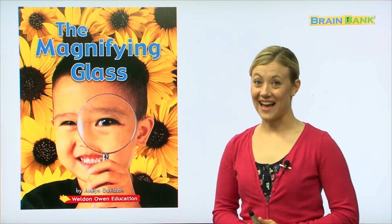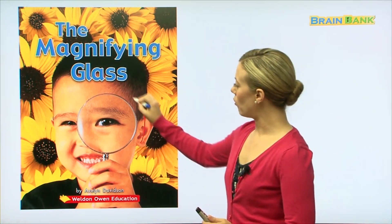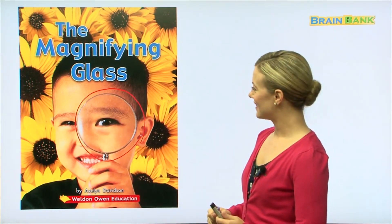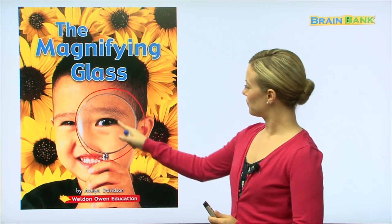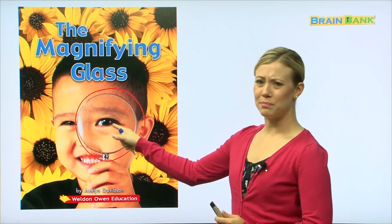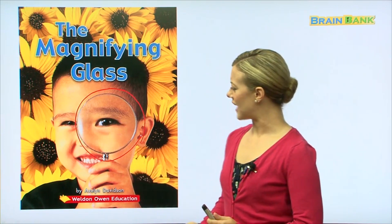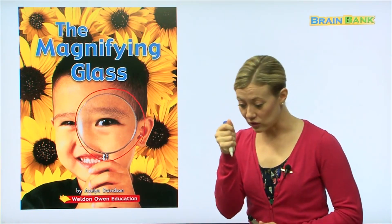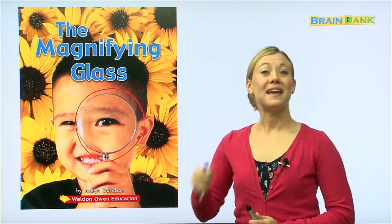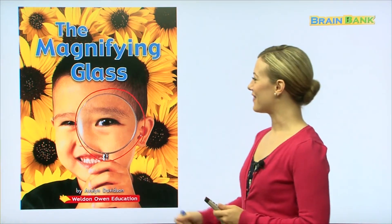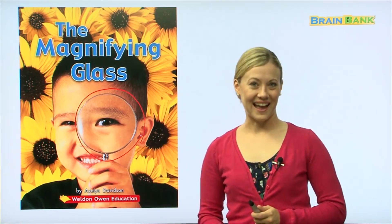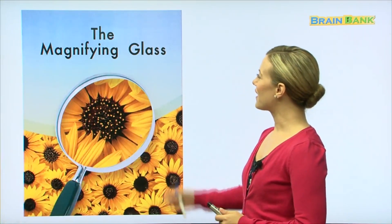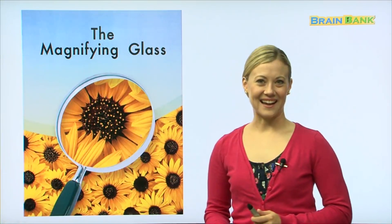Here's a little boy and he's looking through one. But take a close look - this eye looks bigger than this eye. Yes, that's because a magnifying glass, when we look at things through it, makes everything seem bigger. That is what a magnifying glass does.